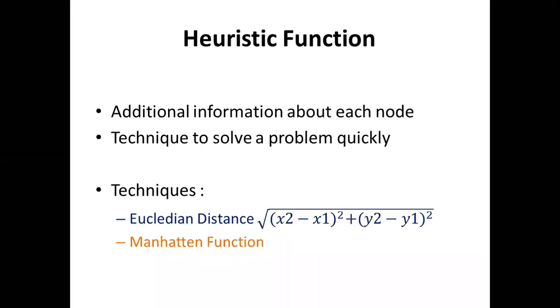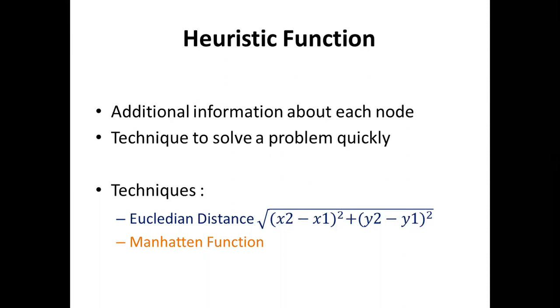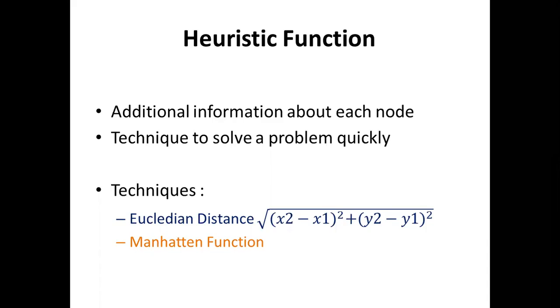The heuristic function gives extra information regarding which branch can be chosen next. There are many ways in which a heuristic function can be included. One is the Euclidean distance function. When using a graph structure, from the current place, when a user wants to choose the next step to move, they can choose based on the distance from the current node. They tend to choose the shortest path, and in this graph structure we use the Euclidean distance function for calculating it.